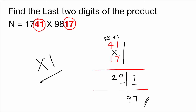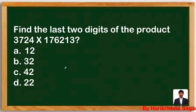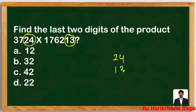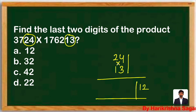Let's look at a practice question. Find the last two digits of a product where the last two digits of the numbers are 24 and 13. Using the I and X pattern: I = 4×3 = 12, last digit 2 with carry 1. X = 2×3 + 4×1 = 6+4 = 10, plus carry 1 = 11. Take the last digit 1, giving the answer 12.